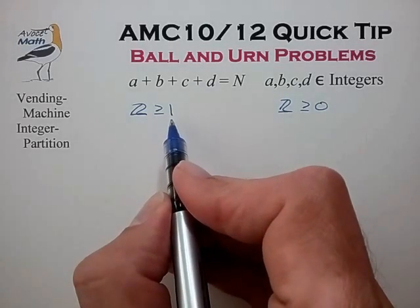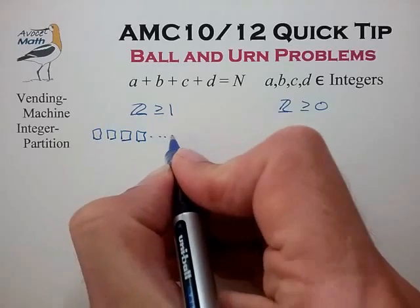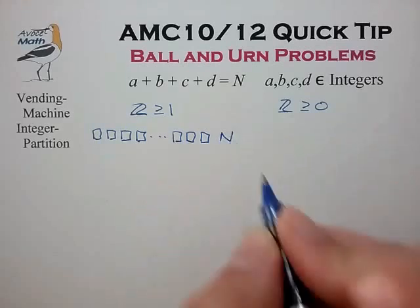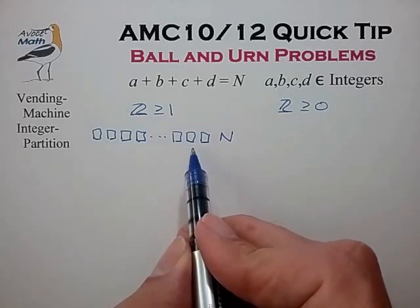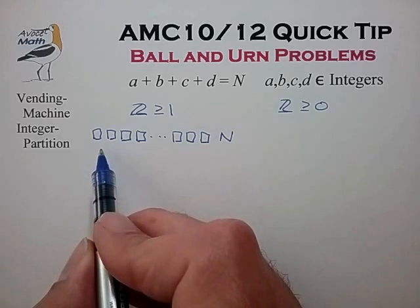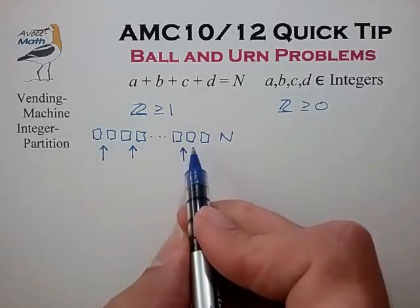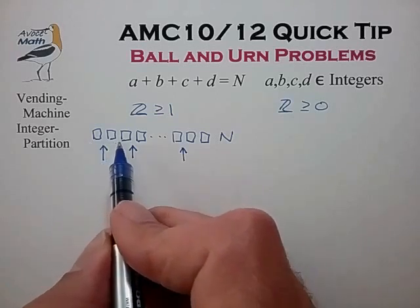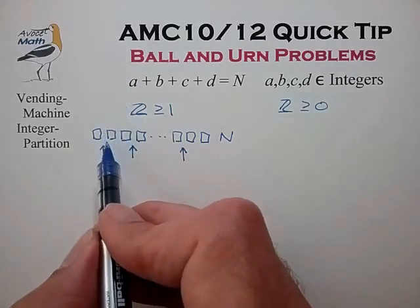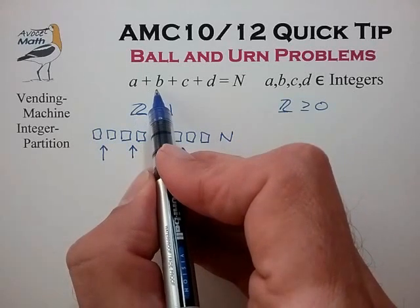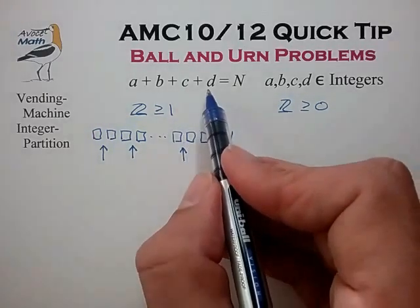In the case of z greater than or equal to 1, the best counting tool is to consider a line of n objects. We have n objects in a row, and we notice that these n objects form n minus 1 slots between them. Our task is to find how many different ways we can arrange three partitions among the n minus 1 slots to form four piles a, b, c, and d. The first pile counts the objects corresponding to variable a, the second to b, the third to c, and the fourth to d.